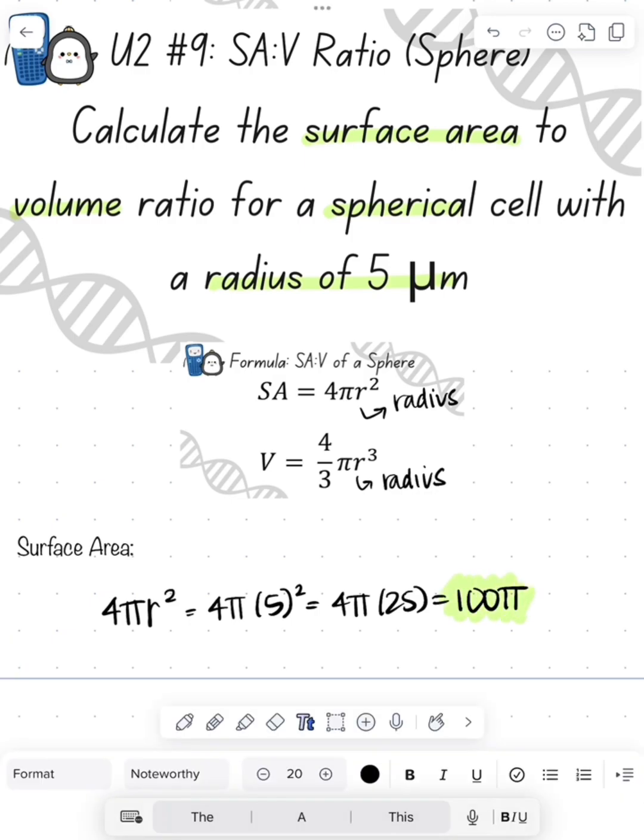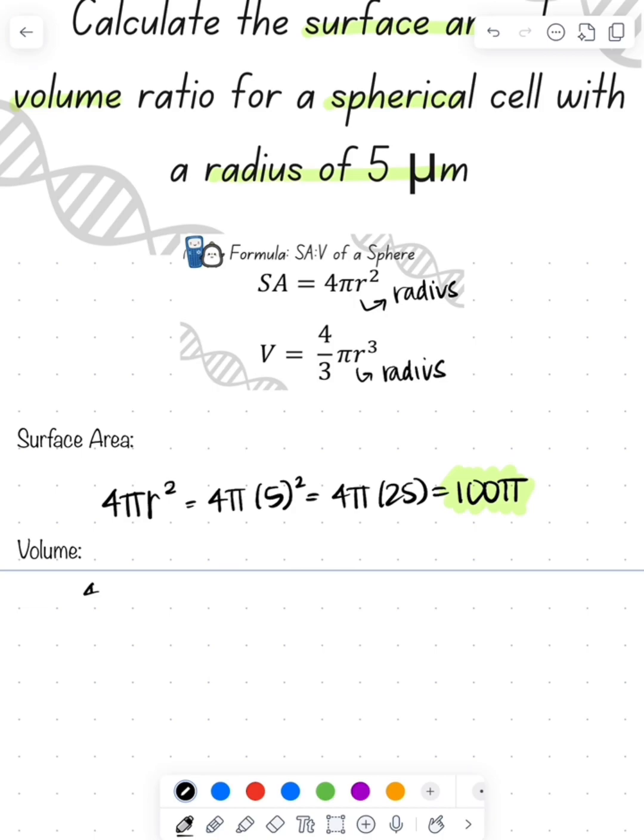So now to figure out volume, again, we're writing out the equation, (4/3)πr³. r is going to be 5, so 5 cubed is 125, so 4 times 125 is 500, so we have 500π over 3 being our final answer for volume.